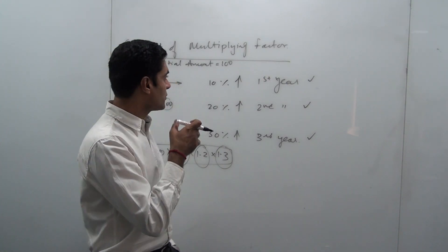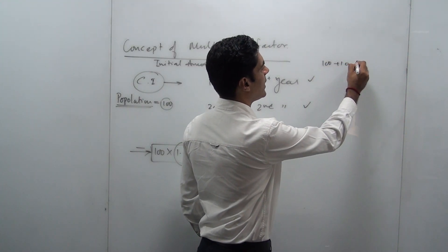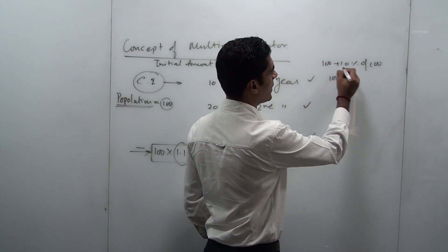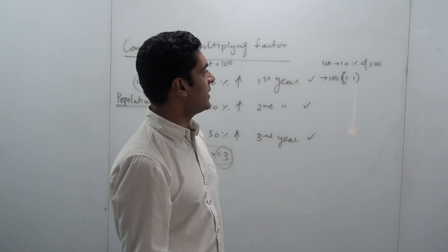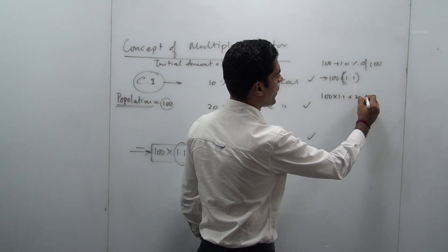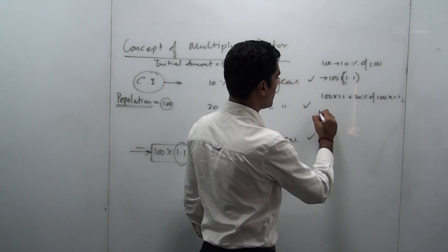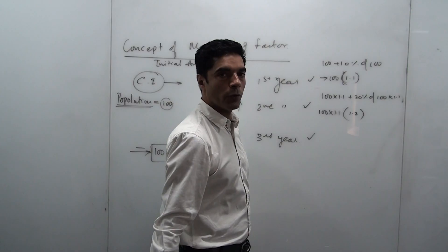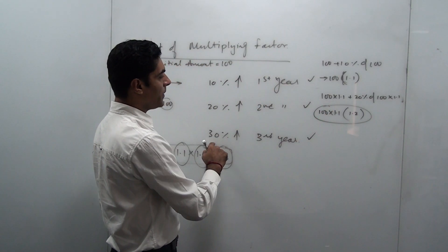It's something that we have done in school. Initially 100 was increasing by 10%, so after the first year it would be 100 plus 10% of 100. If you take 100 common, this becomes 100 into 1.1 — that is the population after the first year. Now for the second year, the 20% increase happens on this amount, so it will be 100 into 1.1 plus 20% of 100 into 1.1. Taking 100 into 1.1 common, you are left with 1 and 0.2, which is 100 into 1.1 into 1.2.